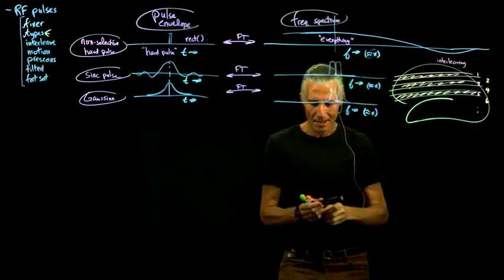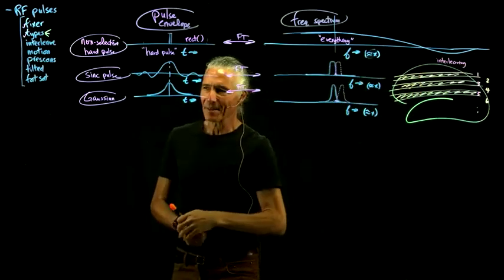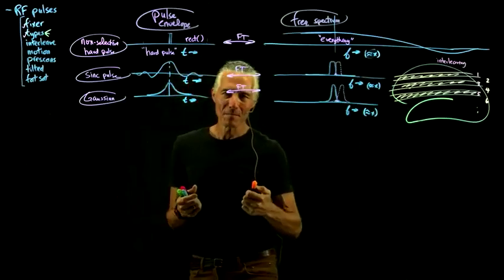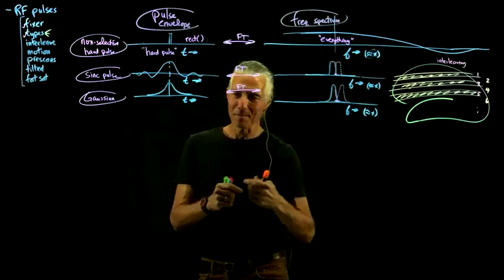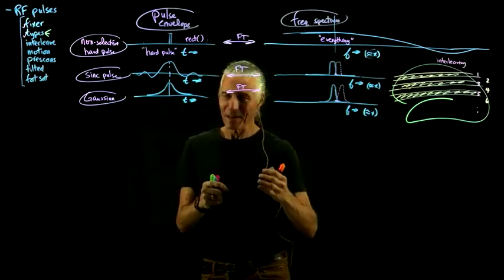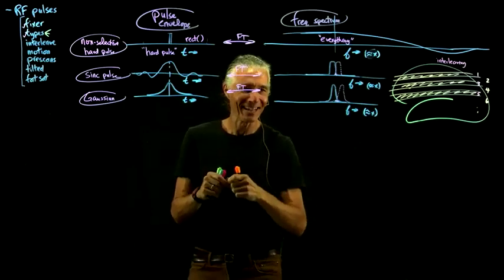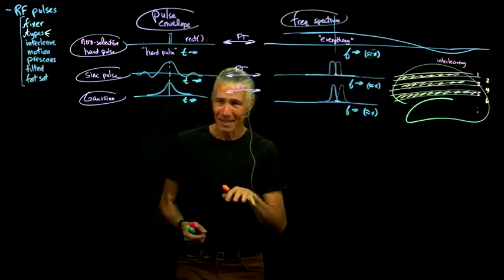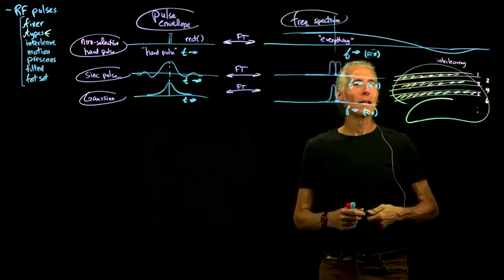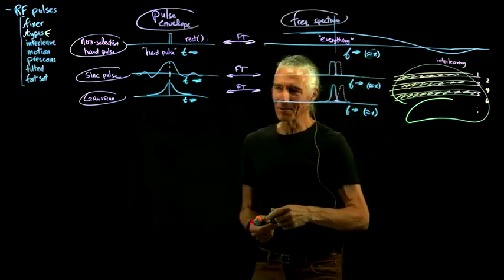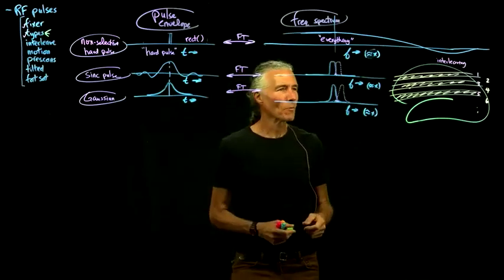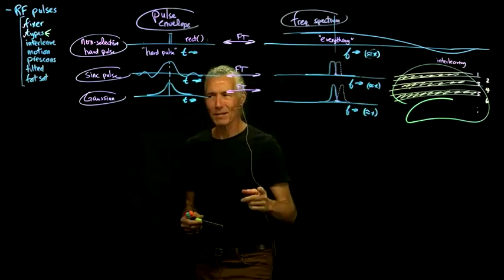But now the problem is: what if you've got a thrashing kid in the magnet? We have a little camera that looks in the magnet, and it's been known to occur — you look at the camera and there's no kid in there. They actually wriggled their way out in the middle of a scan. But say they were just sort of thrashing around, sort of moving around, swallowing, doing stuff. What can happen if we're interleaving?